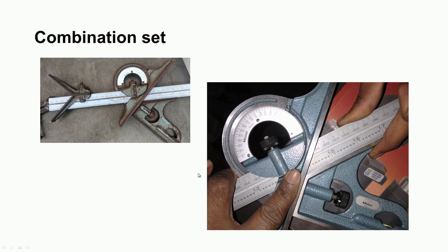Various instruments are used for measurement of angle, tilt, or taper. The combination set consists of a steel rule, a center head, a square head, and a protractor part. The protractor has a body, a blade that can be rotated, and a rotary scale. This is a simple protractor with no vernier, and the scale reads from 0 to 180 degrees in both directions. Its least count is one degree.